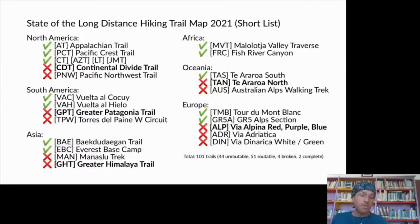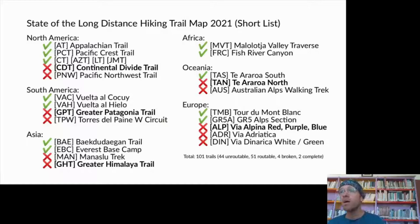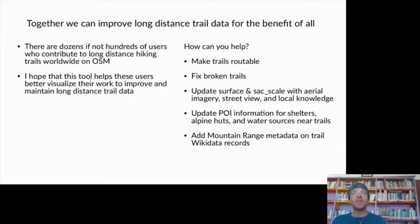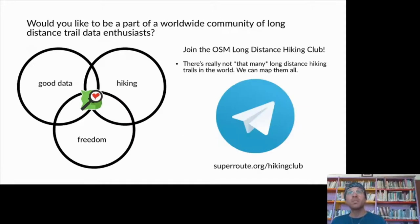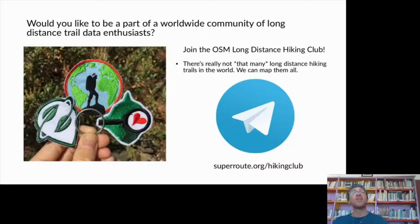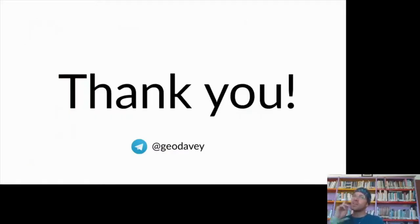In 2021 many trails are routable worldwide, but I really want to get the Continental Divide, Greater Patagonia, Greater Himalaya Trail, Te Araroa North, and Via Alpina Red routable. Join the OSM Long Distance Hiking Club — a Telegram group — to be part of the worldwide community, and I'll send you a patch if you help make these trails routable. Thank you so much and I'll see you on the trail.